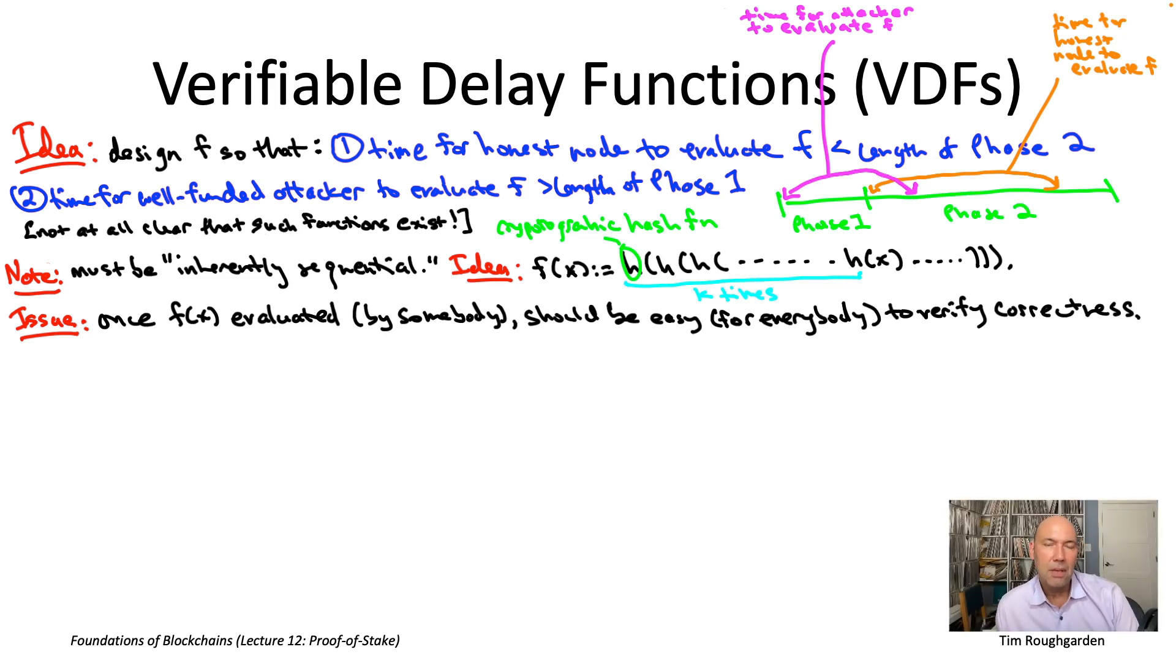So for example, maybe each round of a blockchain protocol involves one VDF evaluation, for example, to generate the pseudorandomness R sub T used in that round.